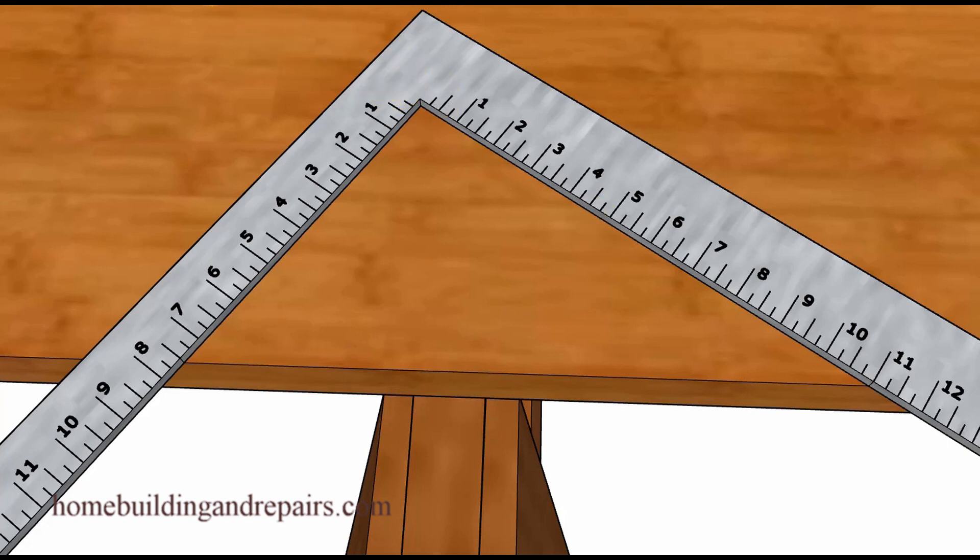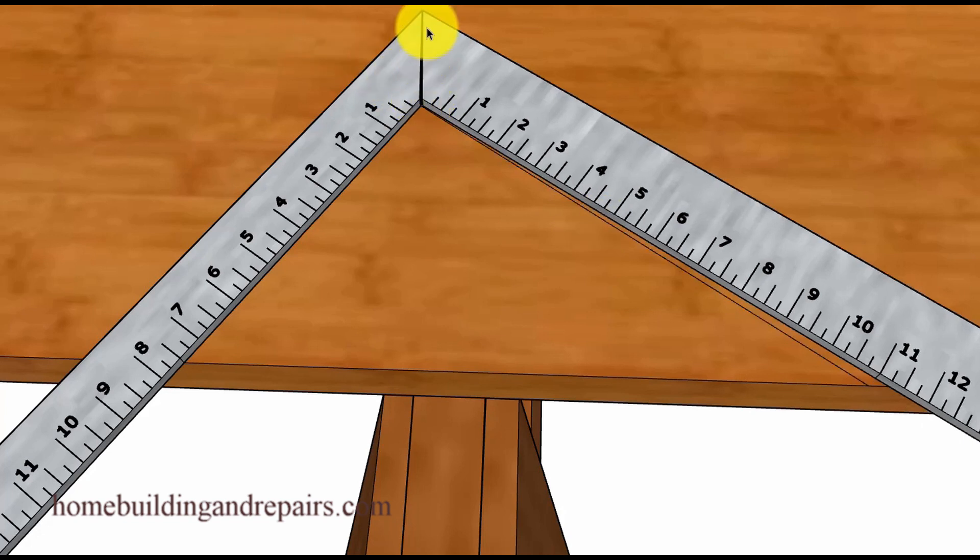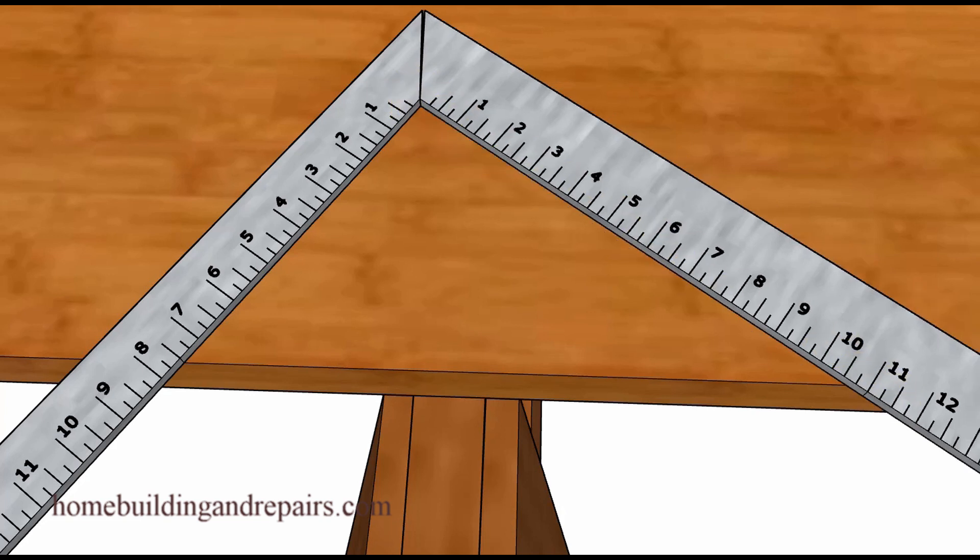And if you notice, I went ahead and separated the framing square so that you can get an idea in which direction it is going to be bent. And of course you can see where this one here is bent outward, whereas the next example is bent inward.